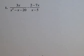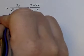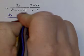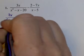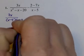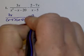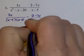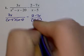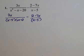Perform the indicated operations and simplify if possible. So I'm going to start by factoring the bottom. And then after I factor the bottom, I'm going to look for a common denominator.